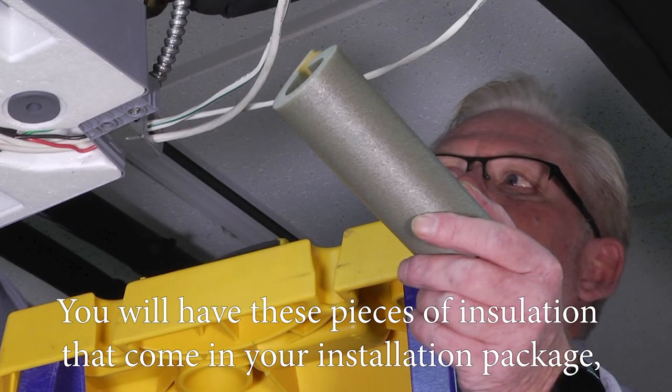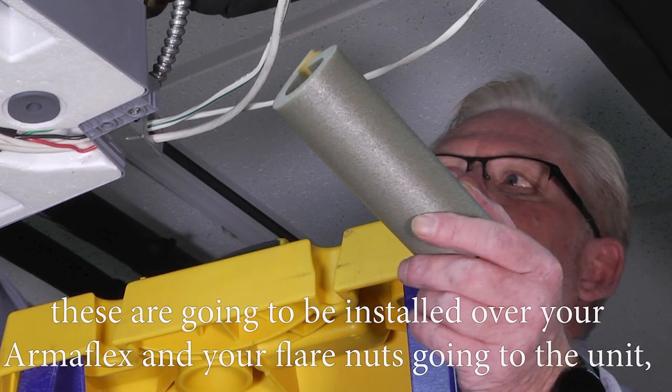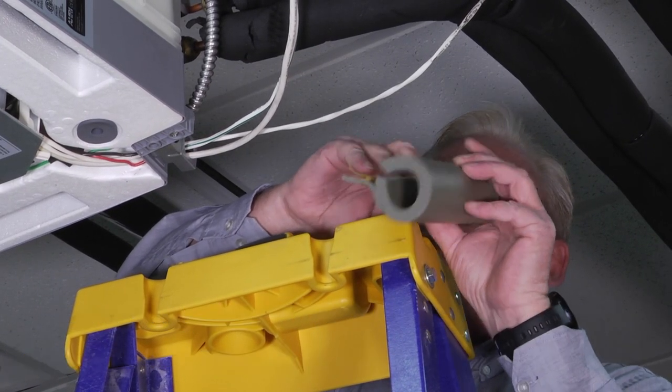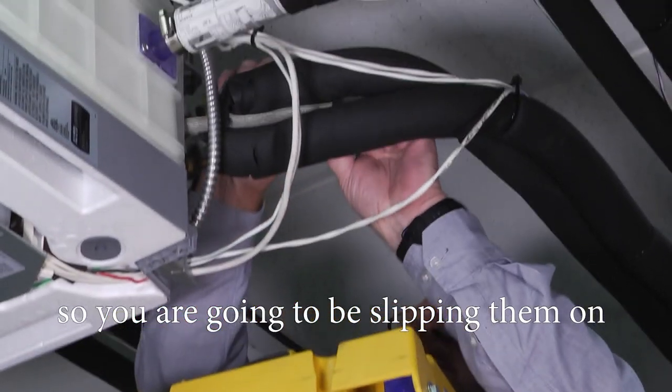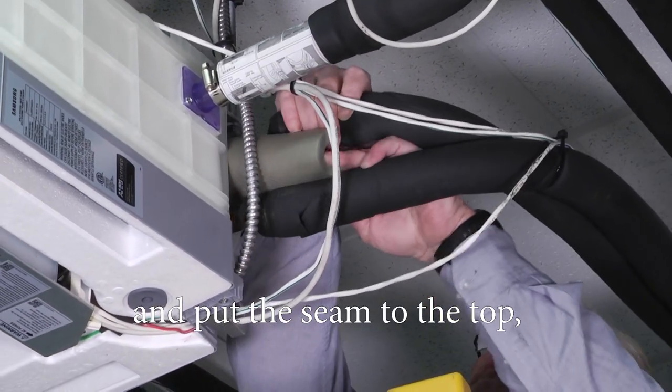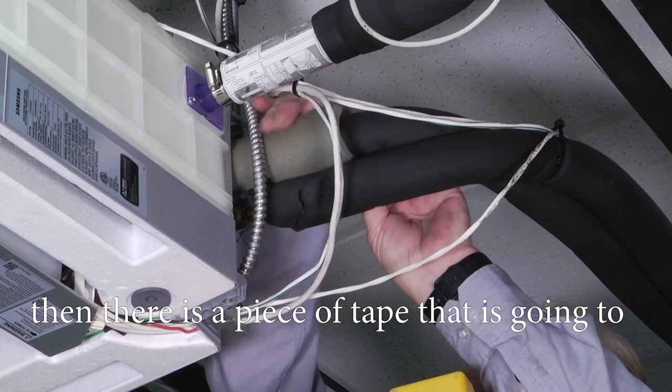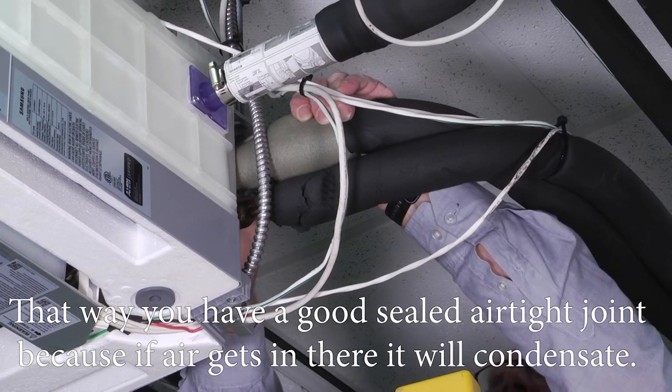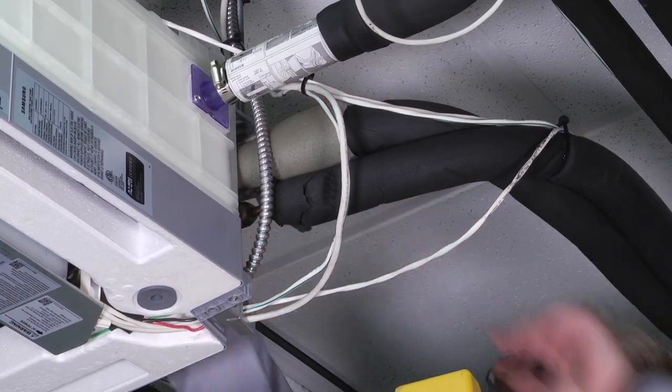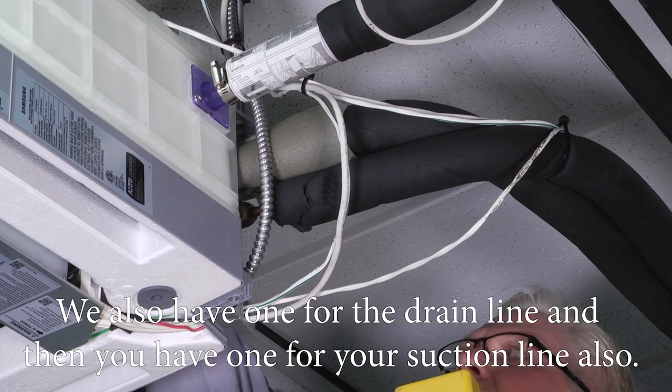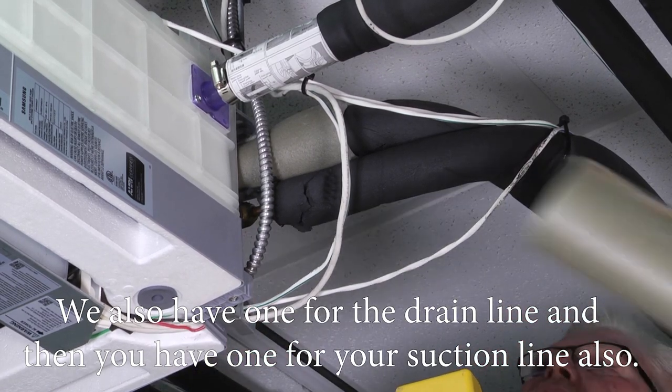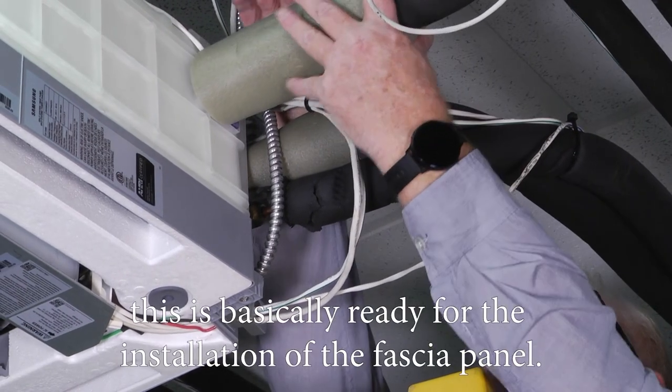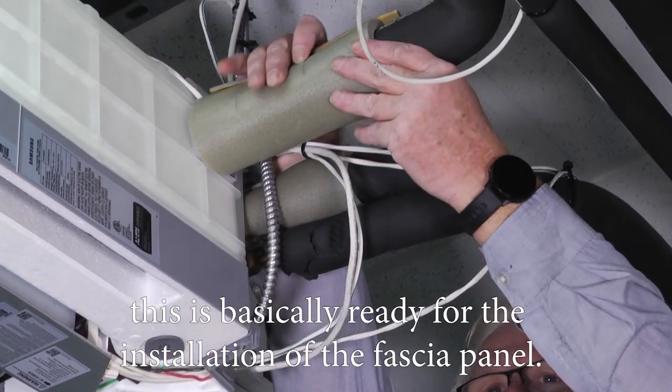You'll have these insulations that come in your installation package. These are going to be installed over your Armaflex and your flare nuts going to the unit. So you're going to be slipping them on and put the seam to the top, and there's a piece of tape that's going to come off that seals it to the other piece. That way you have a good sealed airtight joint, because if air gets in there it will condensate. They also have one for the drain line and one for your suction line. Once you get these all on and sealed down good and tight, this is basically ready for the installation of the fascia panel.